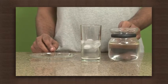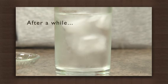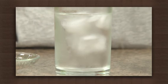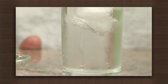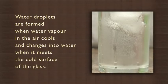Can you see what's on the outer surface of the glass? Yes, that is water droplets. Do you know where the water droplets come from? Yes, water droplets are formed when water vapor in the air cools and changes into water when it meets the cool surface of the glass.